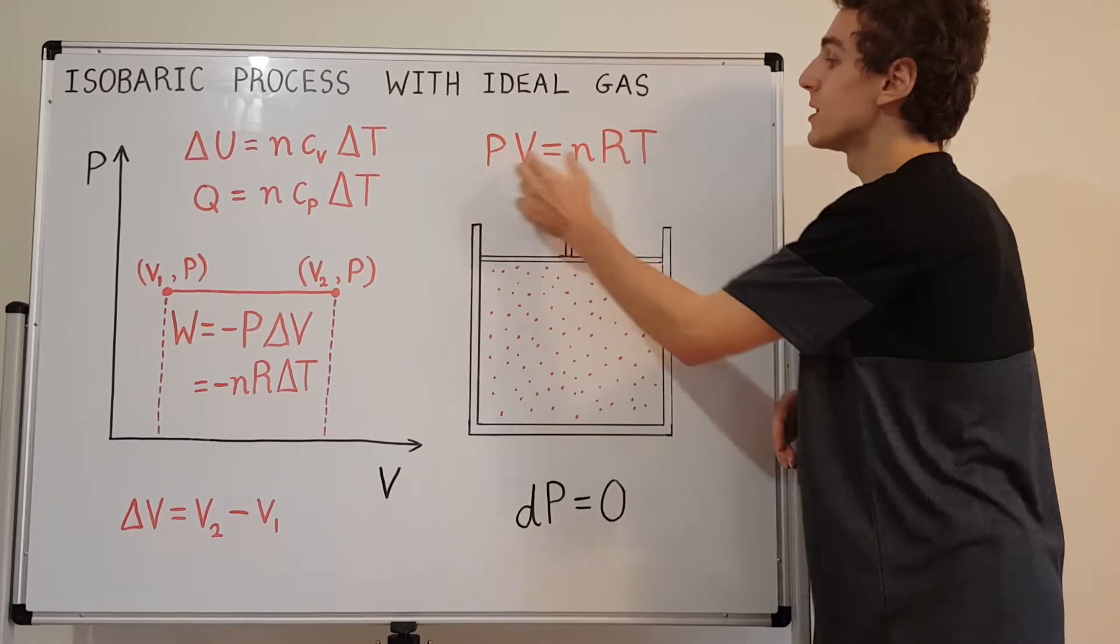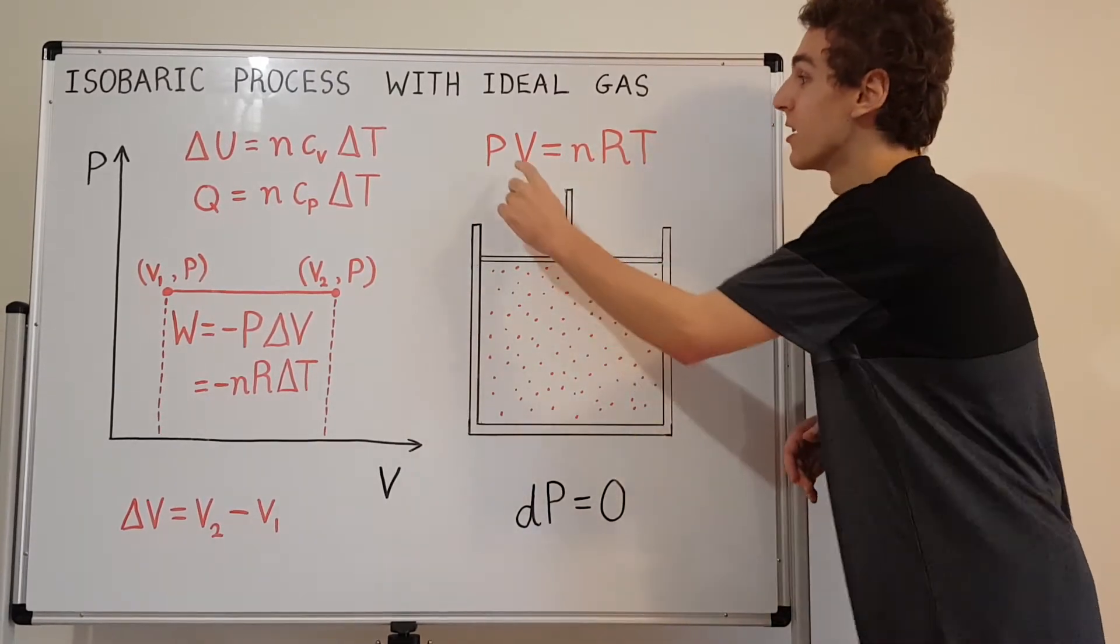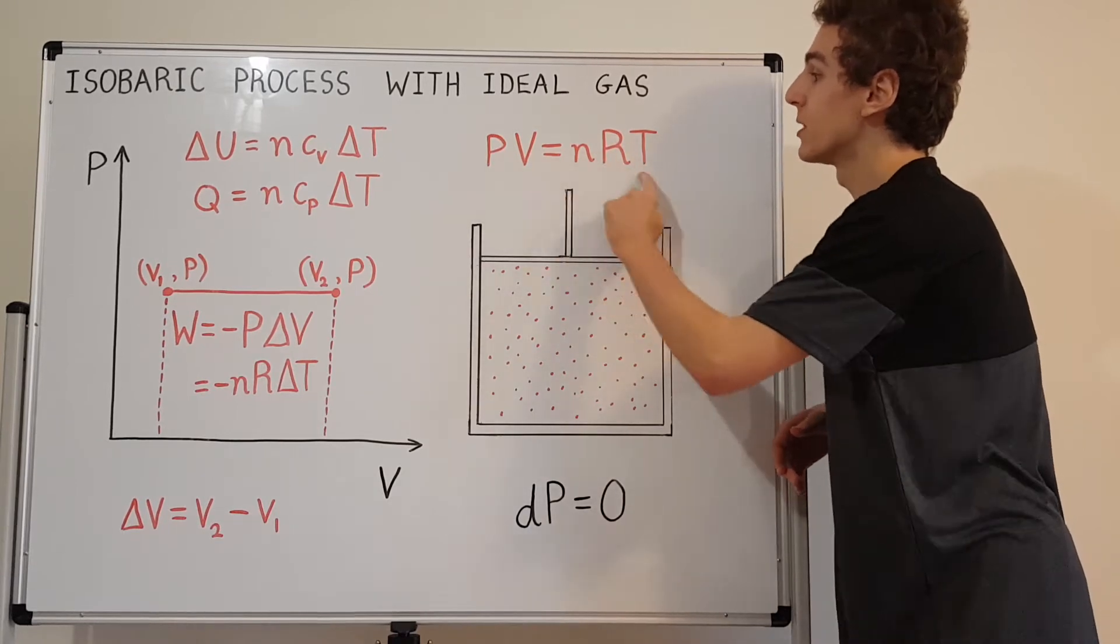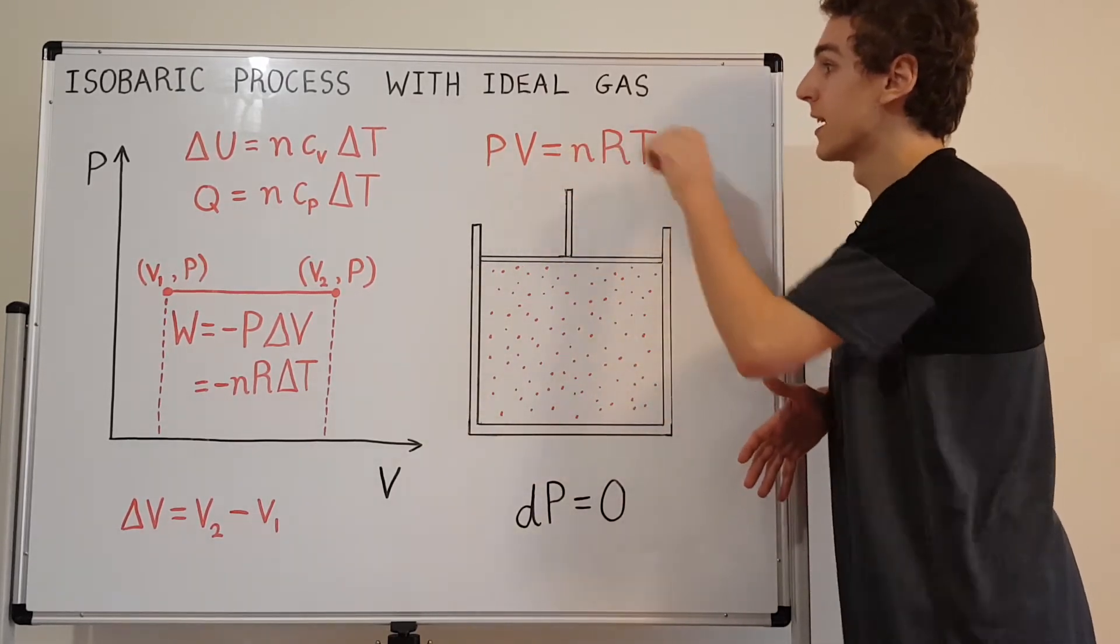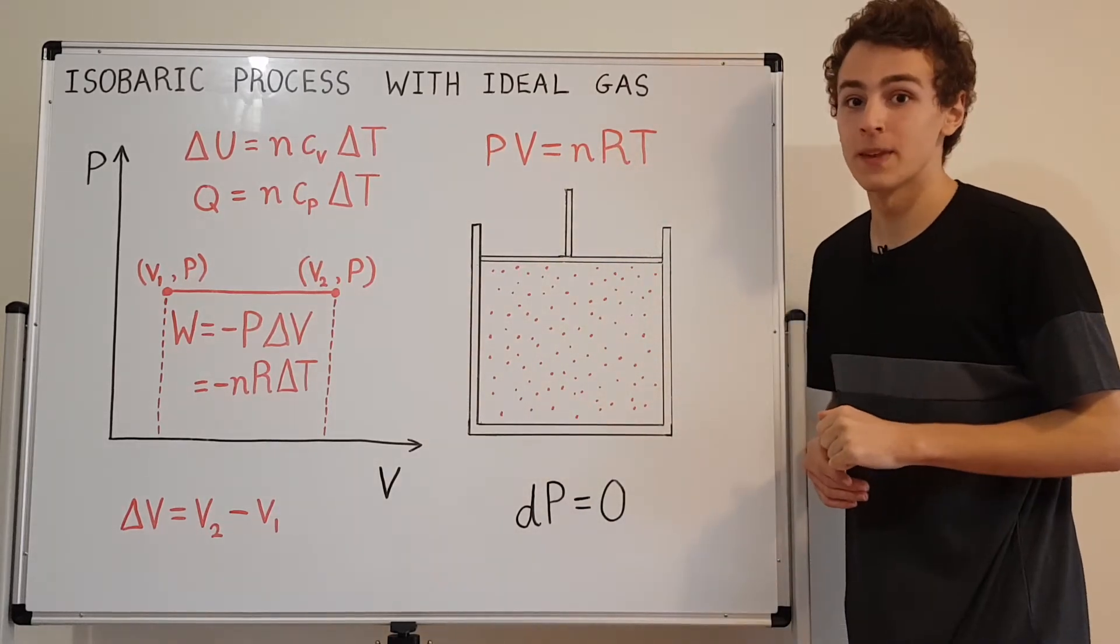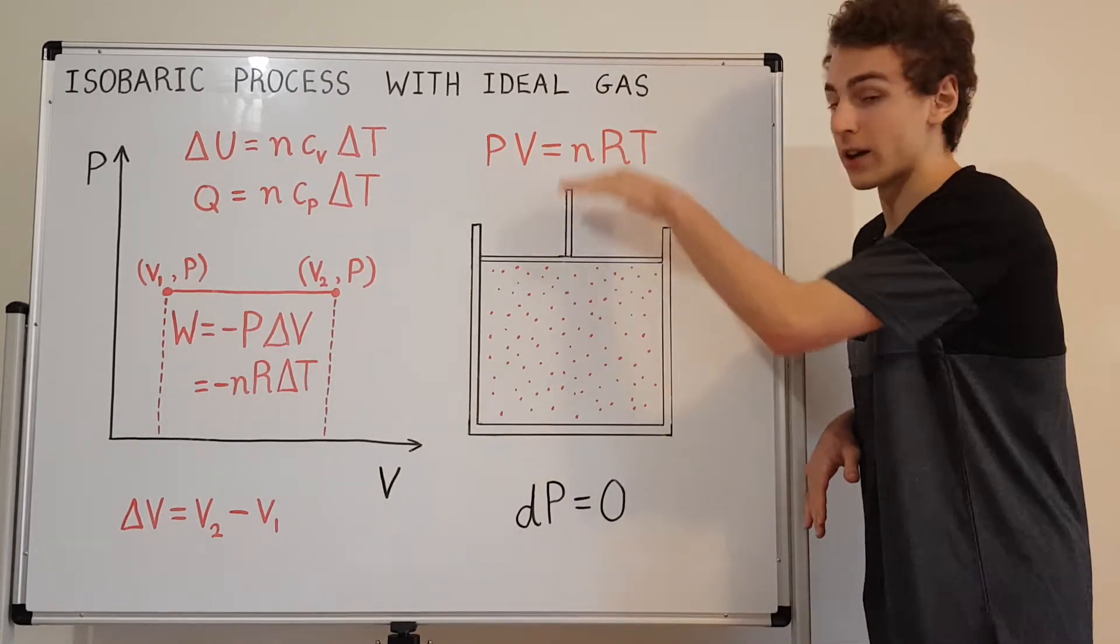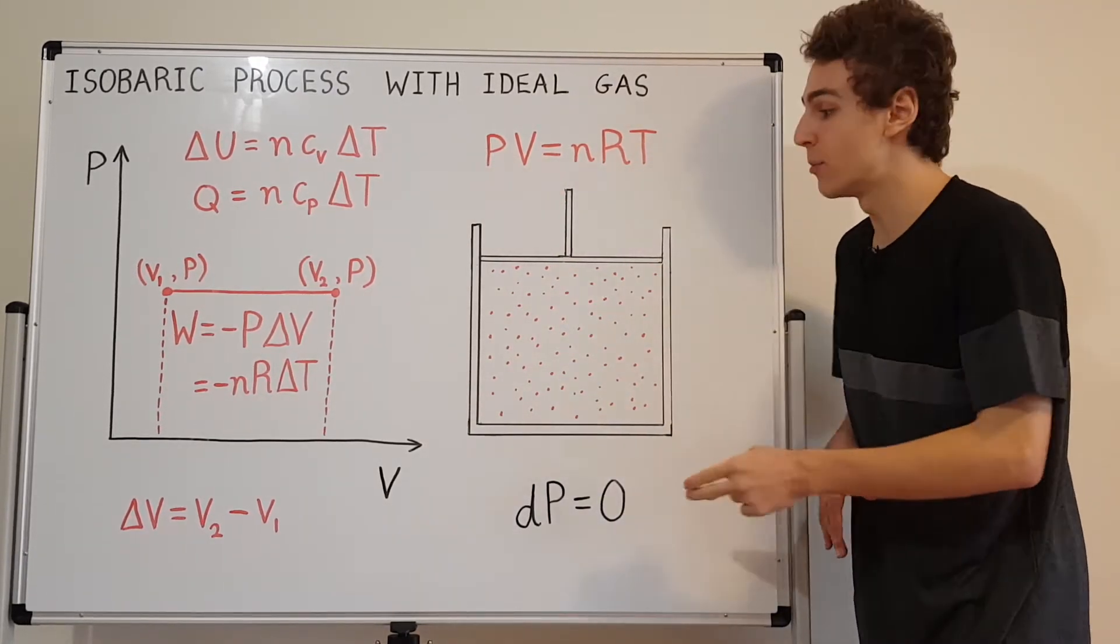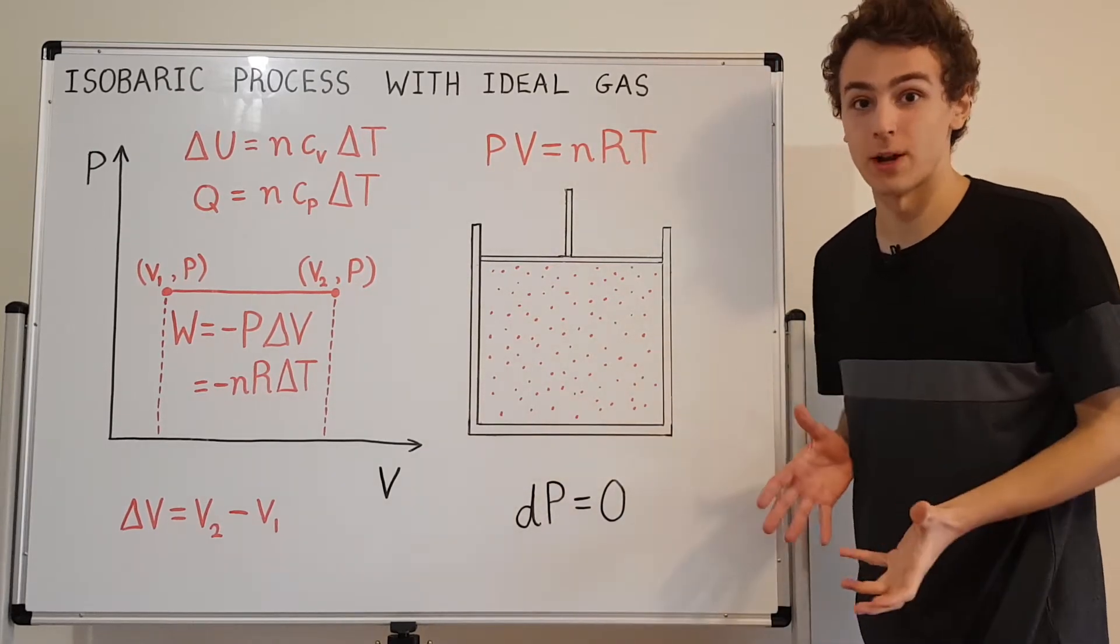So this guy's constant. These two guys are definitely constant. R is by definition a constant. V and T are actually free to change. So the volume can change to adjust to keep the pressure constant and the temperature can also change. So there can actually be heat flowing in and out and there can be work. So work and heat are both viable ways for this system to exchange energy with the surroundings.